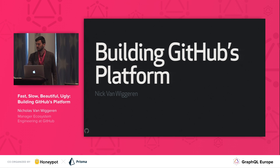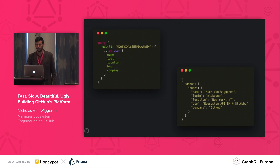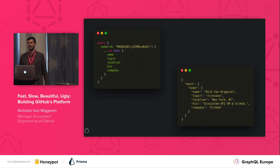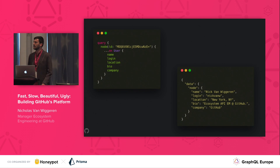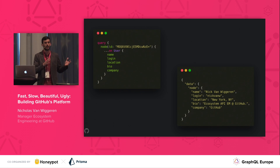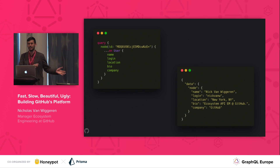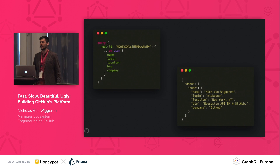Thank you very much for the intro. My name is Nick, and I am the engineering manager for the ecosystem API team at GitHub. That is the team that runs both our GraphQL and REST API — yes, we have both. I've worked at GitHub for about a year, so the GraphQL journey actually started before I even came on, but I've been shepherding it and moving it forward.